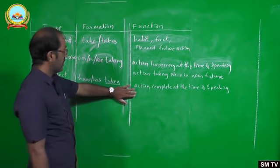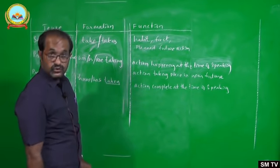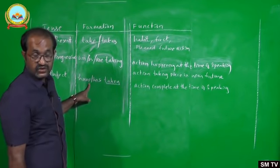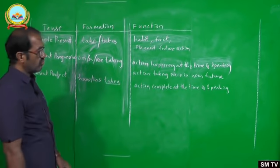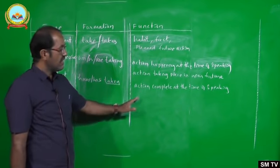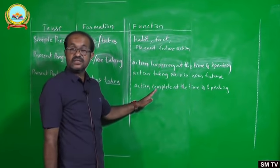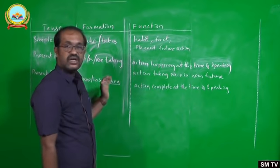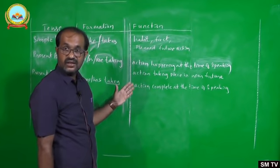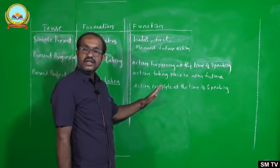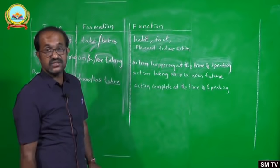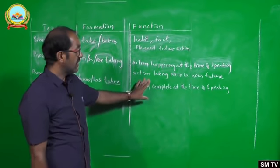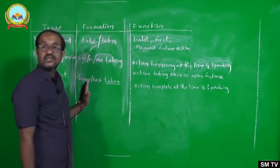You must also take care regarding certain adverbs used with present perfect tense. Adverbs like 'just' and 'already' go with this tense — for example, 'I have just finished my meal', 'I have just had my tea', 'I have already submitted my assignment.' These are correct. Just and already are the two words often seen in present perfect tense.